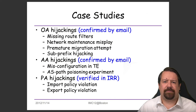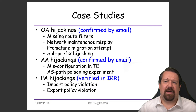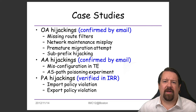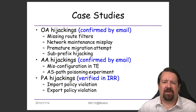For origin anomaly hijackings, the confirmed causes include missing route filters, network maintenance mistakes, and a premature migration attempt — all classifiable as configuration errors, confirming that human errors account for the vast majority of internet outages — as well as sub-prefix hijacking as an actual malicious attempt. For adjacency anomaly hijackings, causes include misconfiguration and an AS path poisoning experiment. For policy anomaly hijackings, there are policy violations from misconfigured policy filters on the routers.